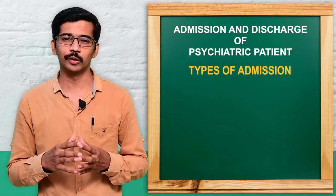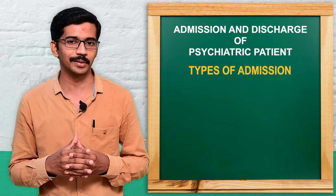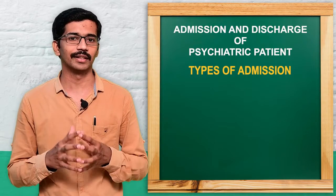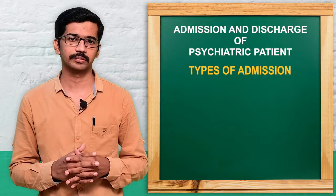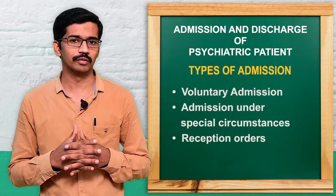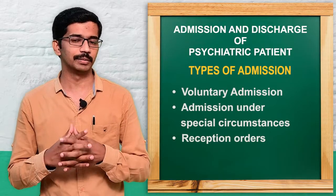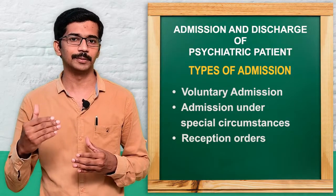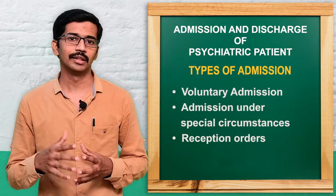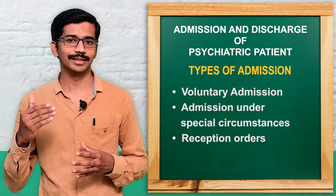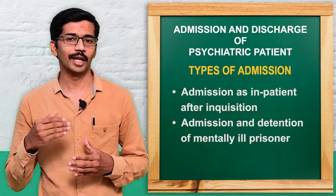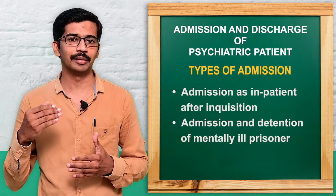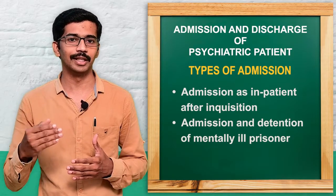Chapter 4 of the Indian Mental Health Act describes the admission procedure. The different types of admission are: voluntary admission, admission under special circumstances, reception order, admission after judicial inquisition, and admission of a mentally ill prisoner.